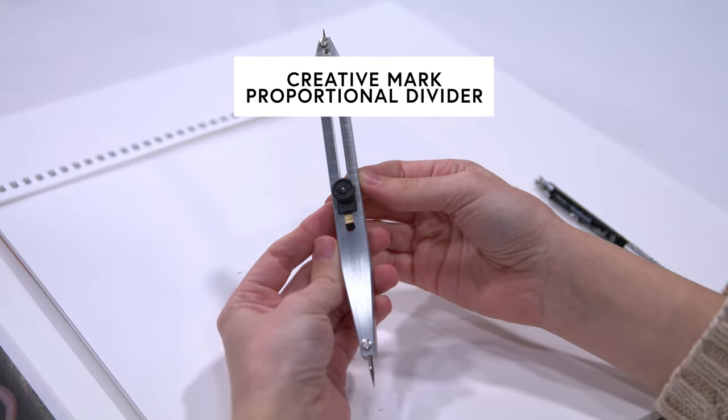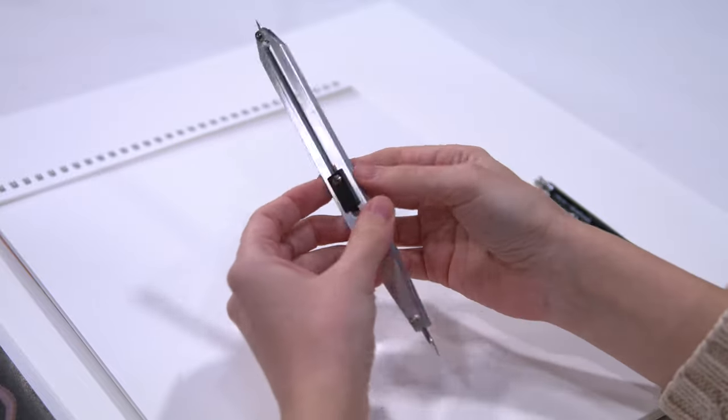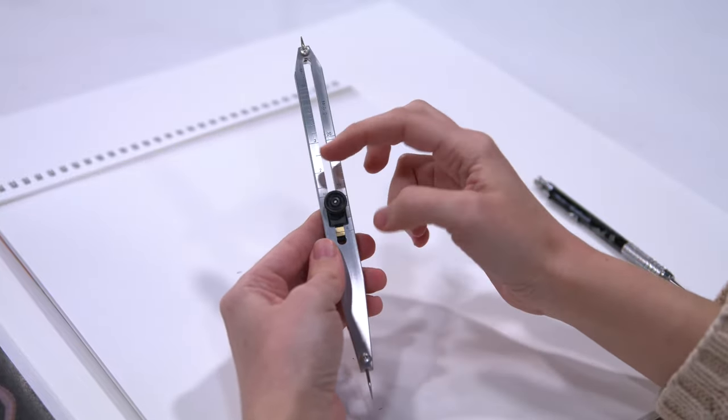Today I'm going to be showing you guys how you can use this Creative Mark proportional divider. Now this divider is made out of aluminum, it's nice quality, and the scale in it will move really easily.